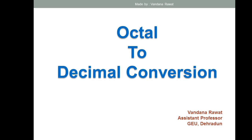Good morning everyone. Now we come to the next topic of conversion: octal to decimal conversion. If you want to convert any number system into decimal, you have to multiply that number with the base of the number system you are converting from. For example, to convert a binary number into decimal, you multiply the given binary number with 2 to the power 0, 2 to the power 1, 2 to the power 2, and so on.